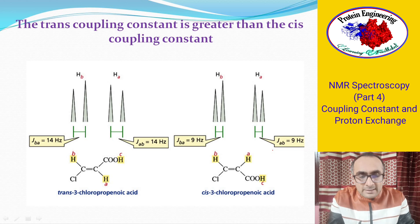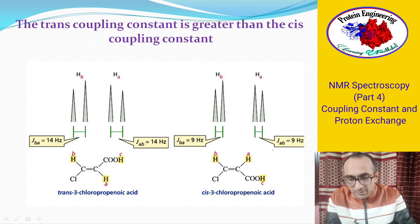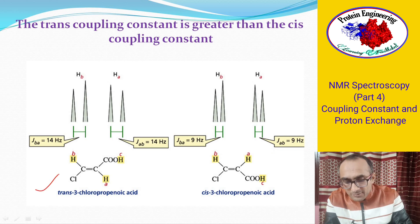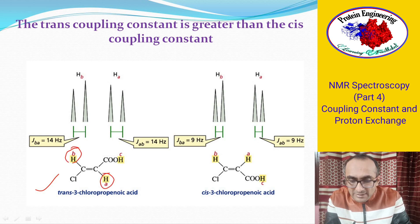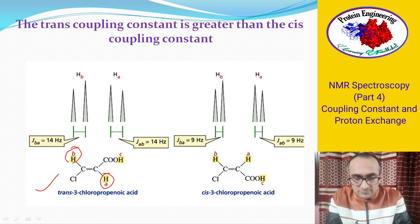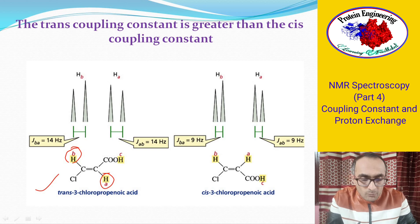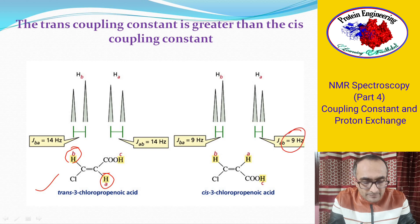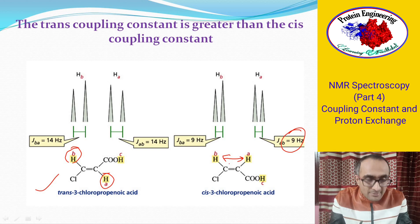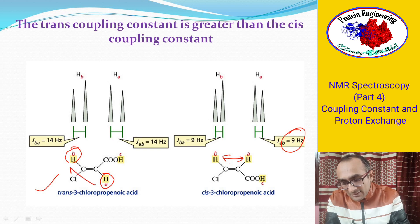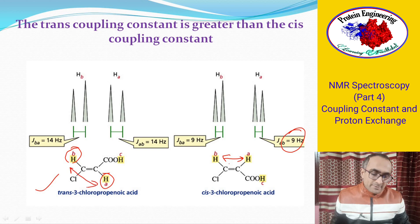The trans coupling constant is greater than the cis coupling constant. For example, in trans-3-chloropropanoic acid, with protons A and B, the J value is 14 Hz in trans configuration, whereas in the cis configuration the same compound gives a value of 9 Hz. A useful mnemonic: in cis configuration the distance between the two protons is less, so J is less; in trans configuration the protons are farther apart and J is higher.